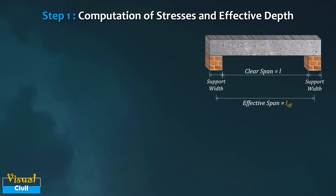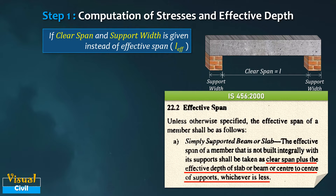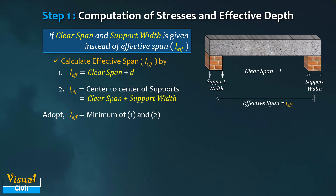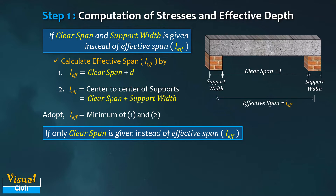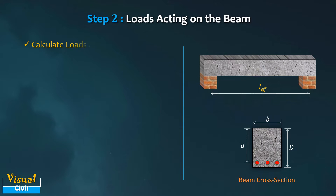Compute the effective depth by deducting the effective cover from the total depth of the beam. If clear span and support width are given instead, calculate the effective span as per clause 22.2 of IS 456-2000. The effective span shall be the lesser of: clear span plus effective depth, or center-to-center of supports. If only clear span is given, take effective span equal to clear span plus effective depth. If only center-to-center span is given, use that value directly.